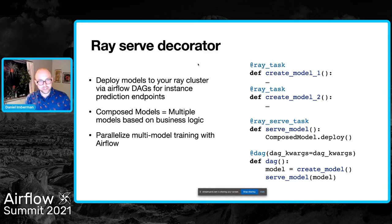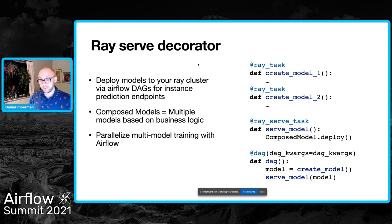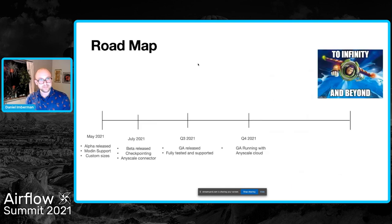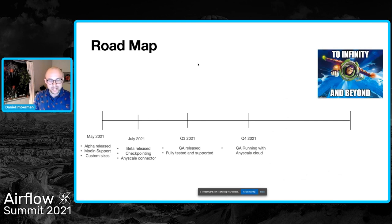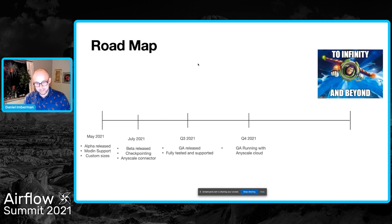The next thing we're working on is a Ray Serve decorator. We're excited about the idea of giving a model serving function and, with that same Pythonic system, being able to serve 20 models at once, compare their outputs, pick the best one as the golden model, and do hyperparameter tuning or model health checks in your Airflow DAGs. As far as the roadmap goes, we've already released our alpha with support for Modin. We're about to release our beta with checkpointing and connections to AnyScale. We're hoping for a GA release in Q3 of 2021, fully tested and supported. By the end of 2021, we're hoping to have GA running with AnyScale Cloud and offer a pretty cool combination of two really interesting open source technologies.